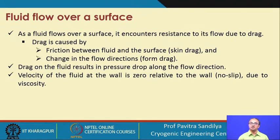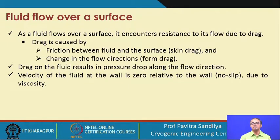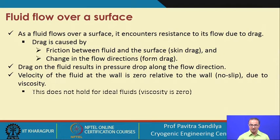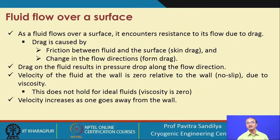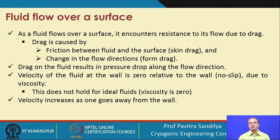Because of this drag, there will be a reduction in the energy of the fluid, which will be reflected in terms of pressure drop. If there is too much pressure drop, the flow may cease at some point. So we have to ensure that whatever pressure drop occurs is compensated by supplying energy to the fluid from external sources. That is why it is important for us to understand the fluid flow. Generally, the velocity of the fluid is taken to be zero at the wall because of a property called viscosity, and this particular assumption is called the no-slip condition. This no-slip condition does not hold for ideal fluids, which are those fluids with zero viscosity. As we move away from the wall, the drag effects reduce and the fluid velocity starts increasing, ultimately attaining the free stream velocity.